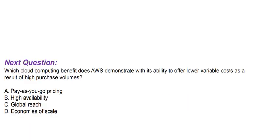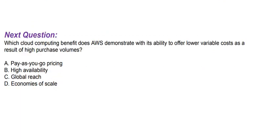Next question: Which cloud computing benefit does AWS demonstrate with its ability to offer lower variable costs as a result of high purchase volumes? Option A: Pay-as-you-go pricing. Option B: High availability. Option C: Global reach. Option D: Economies of scale.